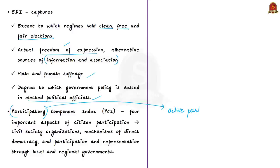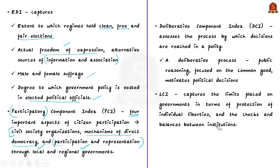Based on the participatory principle, the VDEM participatory component index takes into account four important aspects: civil society organizations, mechanisms of direct democracy, and participation and representation through local and regional governments. There is also a deliberative component index based on the deliberative principle, which captures to what extent the deliberative principles of democracy are achieved. It assesses the process by which decisions are reached in a polity — including public reasoning focused on the common good, which motivates political decisions.